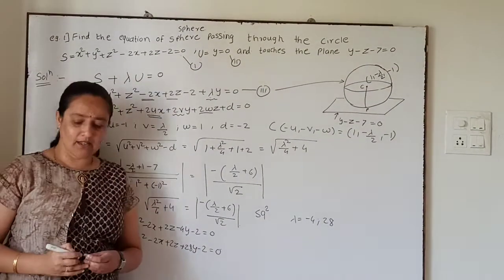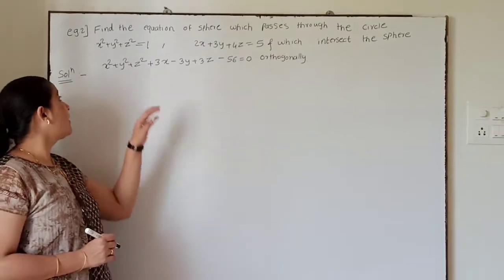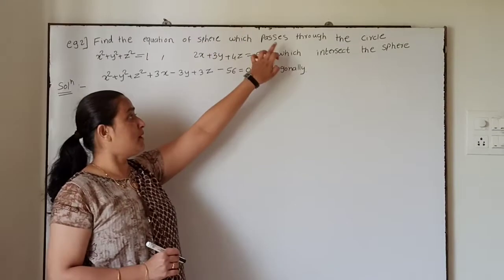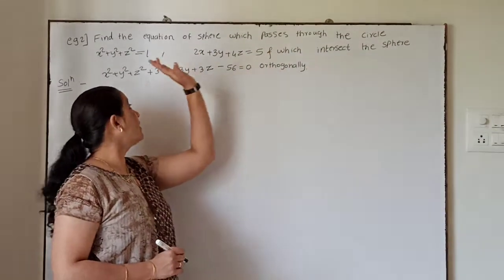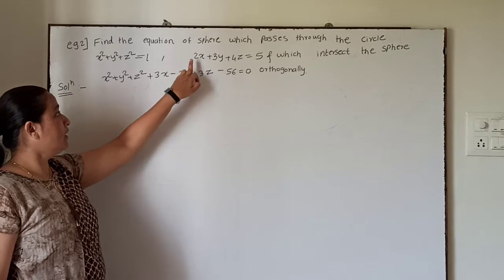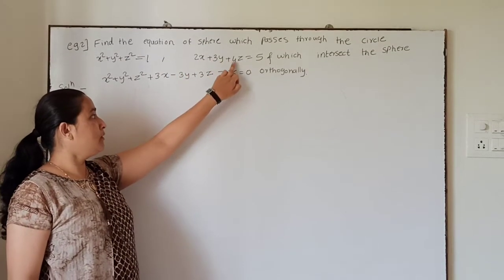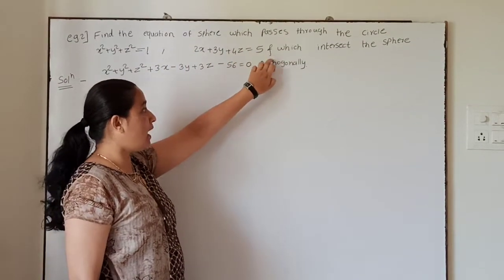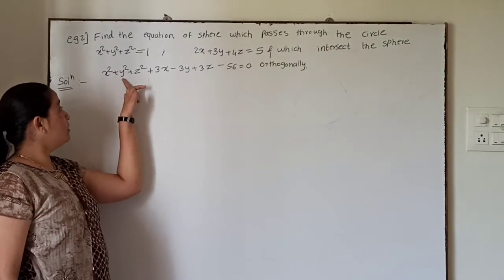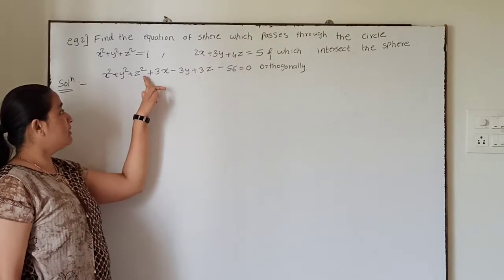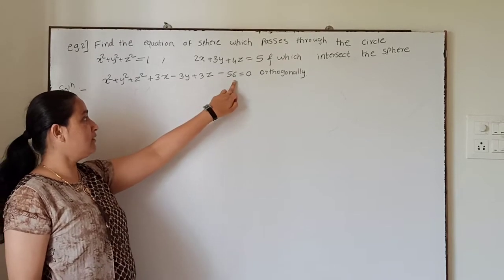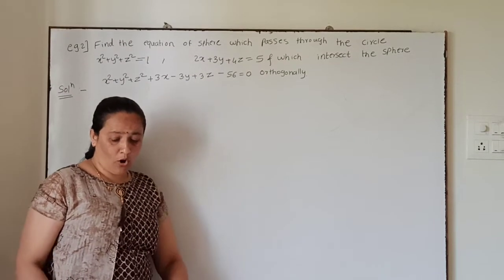Now we will see the second example. Find the equation of sphere which passes through the circle x² + y² + z² = 1, 2x + 3y + 4z = 5, and which intersects the sphere x² + y² + z² + 3x − 3y + 3z − 56 = 0 orthogonally.